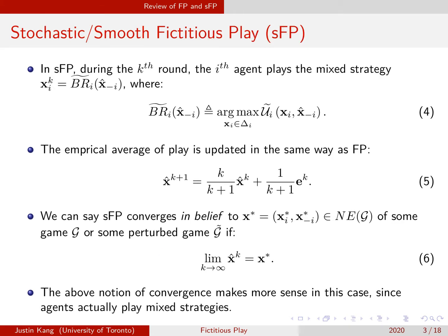In SFP, in each round, each agent plays a perturbed best response to their opponent's empirical average strategy. There are two big differences here. First, this perturbed best response is a function in that it's single-valued, so we can just play the best response directly. Second, the agents are now playing a mixed strategy, and so this notion of convergence to a mixed strategy starts to make more sense. This is one of the motivating reasons behind the introduction of SFP.